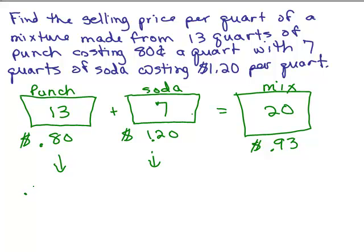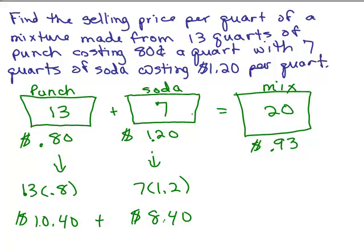So let's find out the real amount of money this ends up costing right here. It would be 13 times 0.8. This would be 7 times 1.2. Now you could write 0.80 and you could write 1.20. It doesn't matter. But what does that come out to in dollars and cents? This would be $10.40, and this would be $8.40. So the cost if you bought the punch and soda separately, you just add those numbers up and that's $18.80. So if you had bought the punch and soda, 13 quarts of punch, 7 quarts of soda at these prices, it cost $18.80.